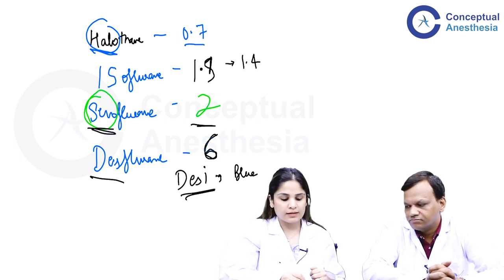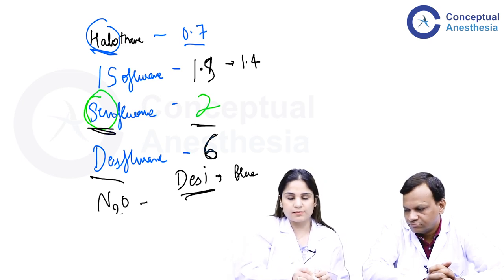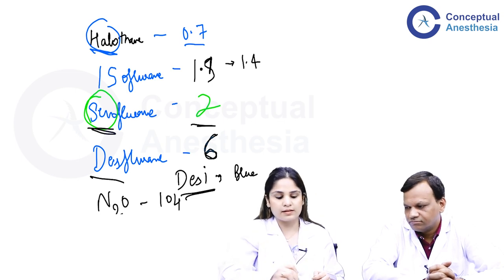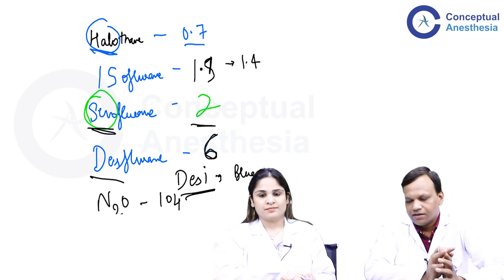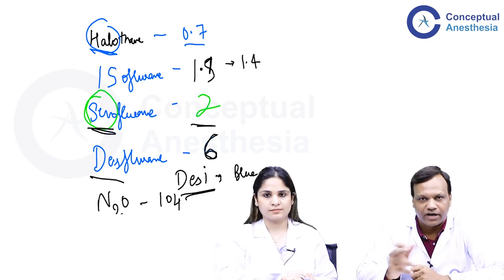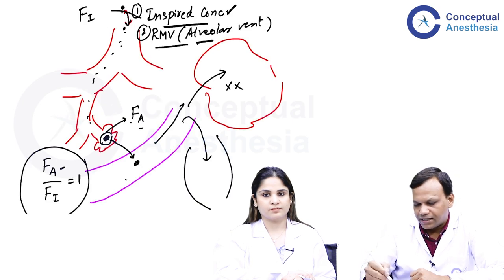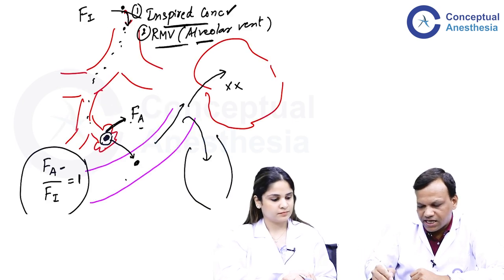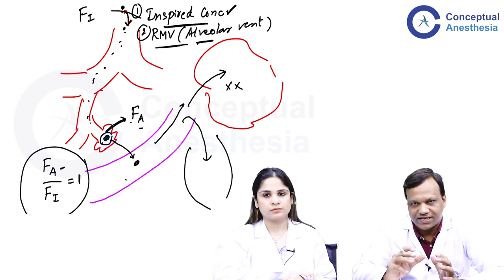And of course, to complete the list, as mentioned earlier the MAC of nitrous oxide is 104%. So the MAC values to remember are: halothane 0.7, isoflurane 1.4, sevoflurane 2, desflurane 6, and nitrous oxide 104%. MAC is inversely related to potency.